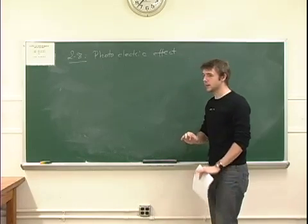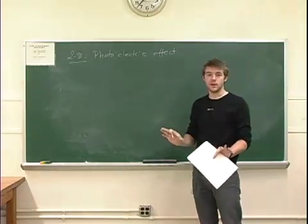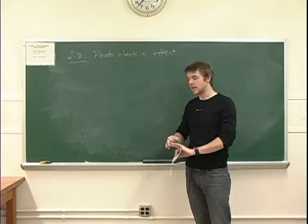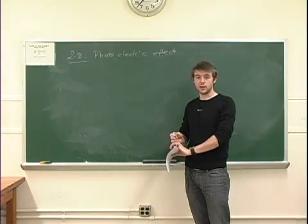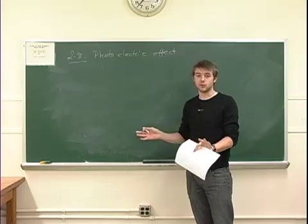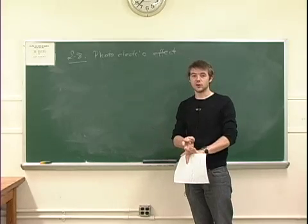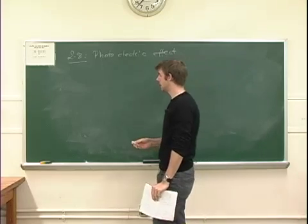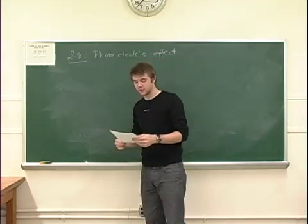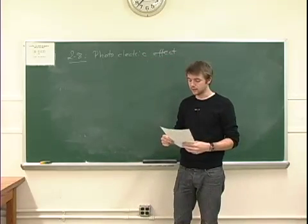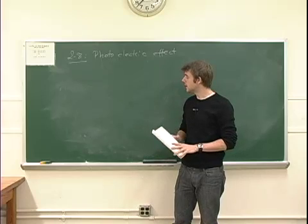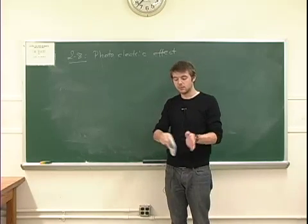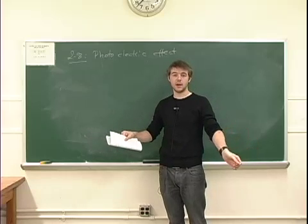Apparently quantum mechanics is so weird that it cannot be classified as classical physics. Even Einstein's theory of relativity, which I think is weird, is still considered classical physics — that's how strange and absurd quantum mechanics is. Some of the predictions of quantum mechanics are that particles, instead of having to be in one place at any given time, can actually be in two places at the same time.